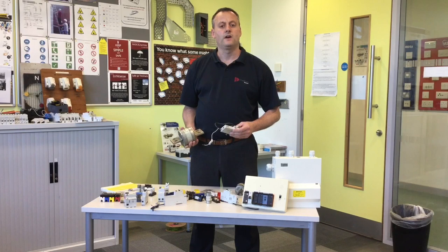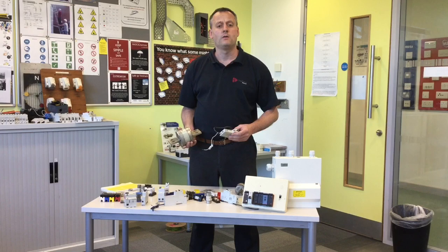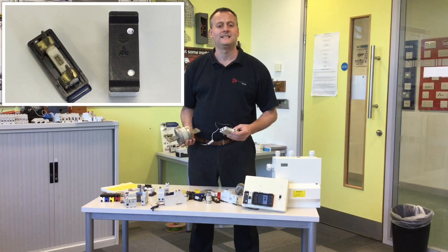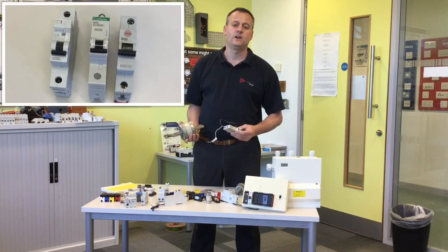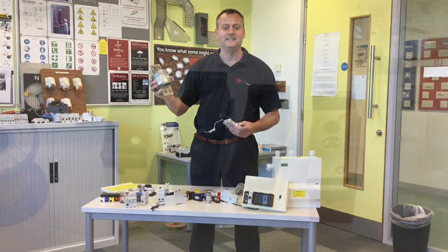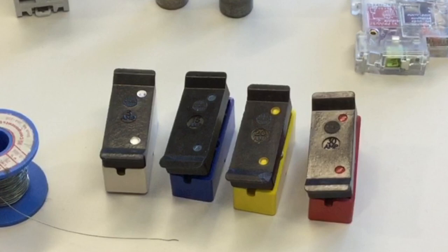We're going to look at the overcurrent protection devices covered on our course and in our coursework material. We'll examine the rewireable fuse, BS3036 semi-enclosed rewireable fuse, the BS1361 cartridge fuse, the BSEN60898 circuit breaker, along with the high rupturing capacity BS88s. First, we'll look at this semi-enclosed rewireable fuse, BS3036.